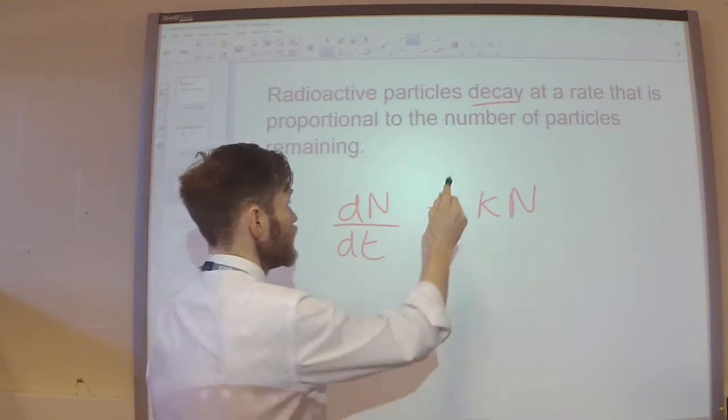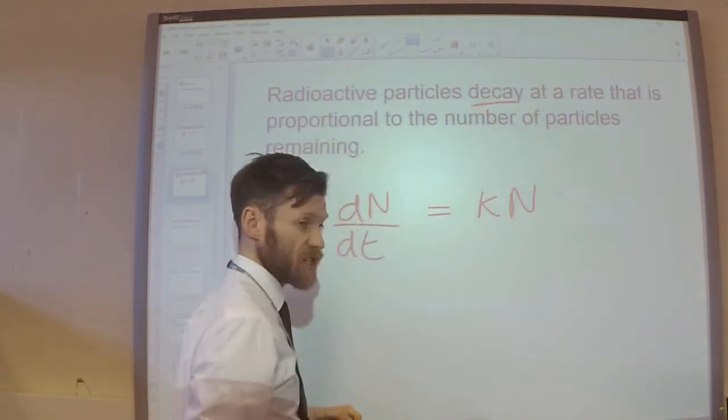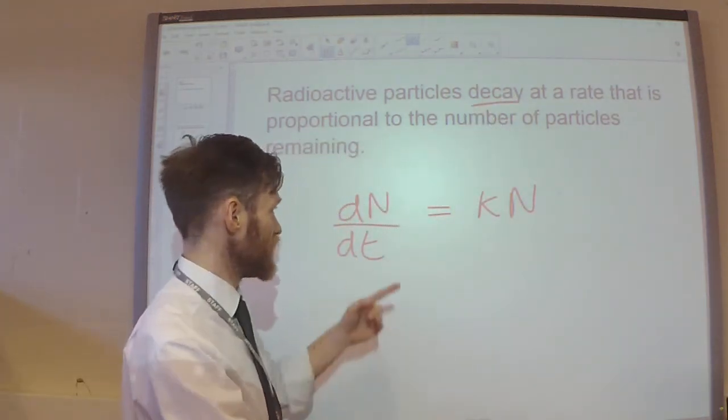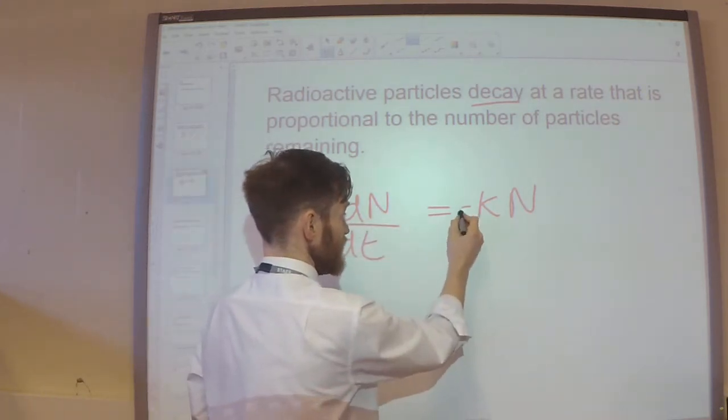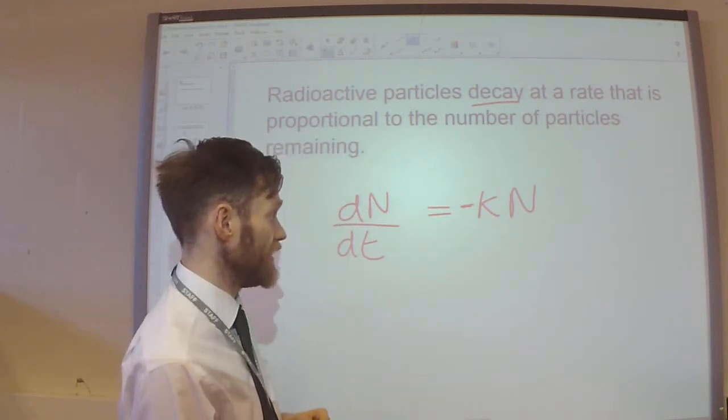However, it's decaying. So, the number of particles are going down. So, this rate should be negative. So, I need to have a negative in front of the k and n there.